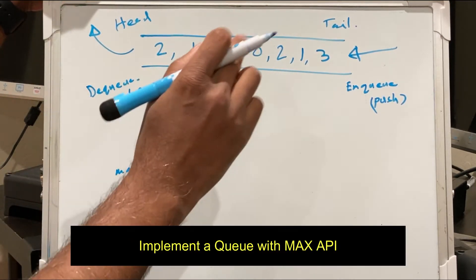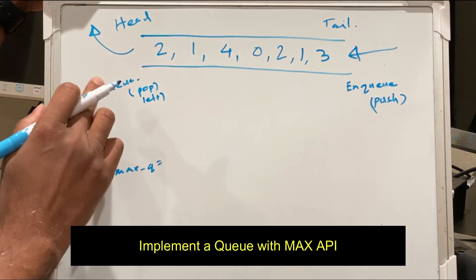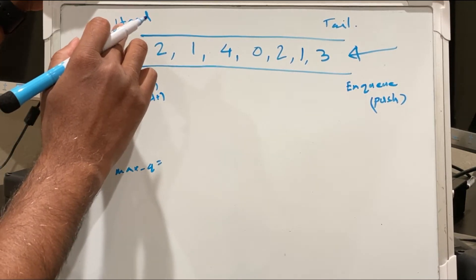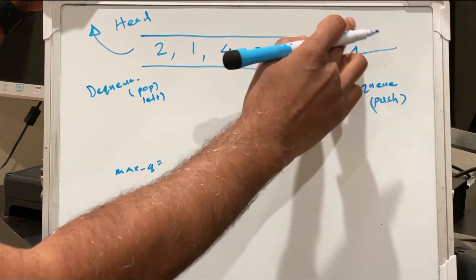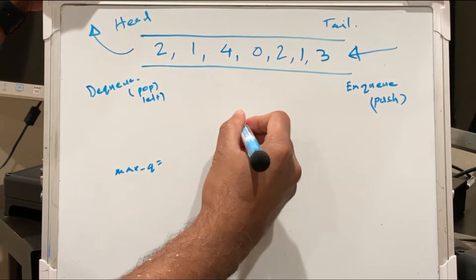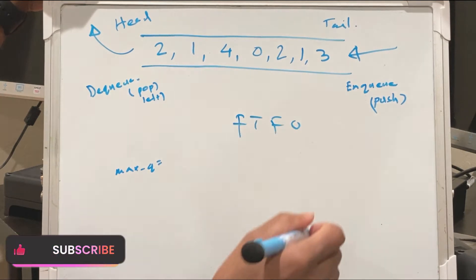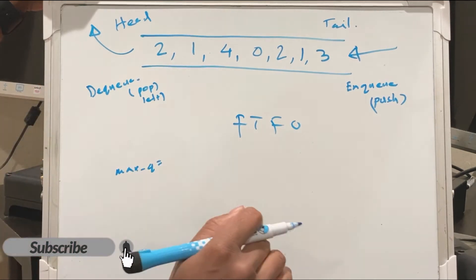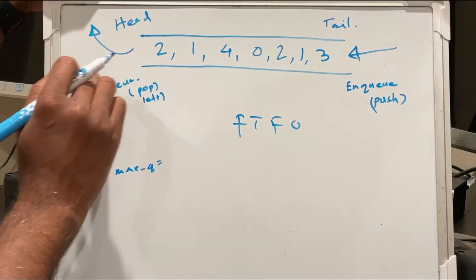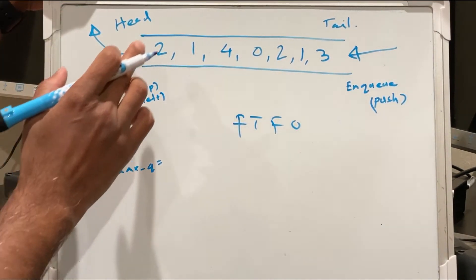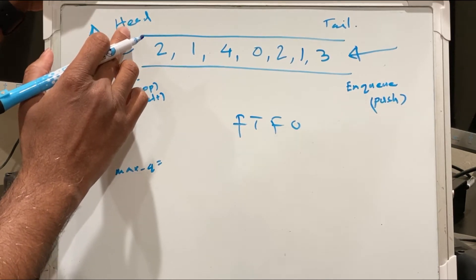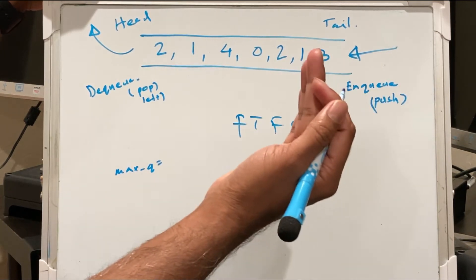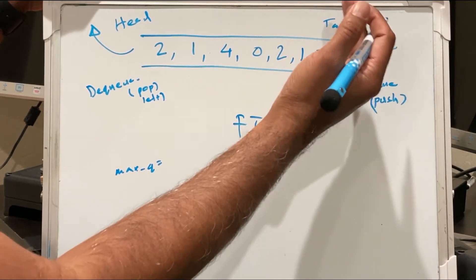In the queue data structure we support enqueue and dequeue operations. The dequeue operation happens on the head and the enqueue operation happens on the tail. This is a FIFO data structure, meaning first in first out — whoever comes first will get out first. We do dequeue from the left or head of the queue, and enqueue or push or append on the tail side.